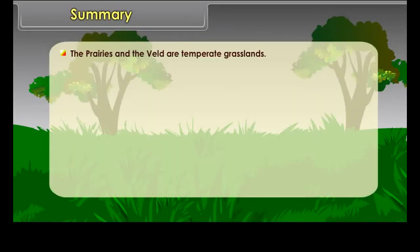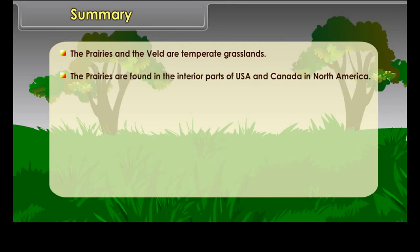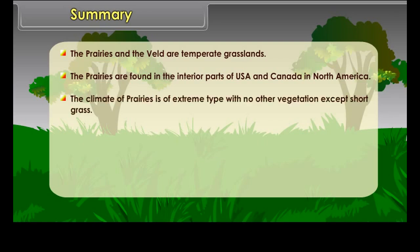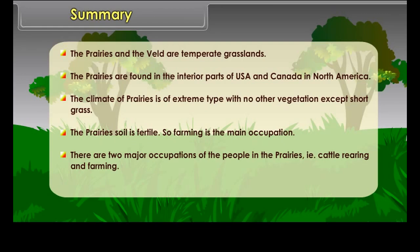Occupation of the people in the Veld: Sheep rearing is the most important occupation of the people in the Veld, and cattle also graze in large numbers. The Angora goats and Merino sheep of this region are known for their fine quality of wool. The cattlemen supply most of the local needs of milk, mutton and wool. In certain parts of the Veld, farming is also practiced, though it is affected by low rainfall and occasional droughts.